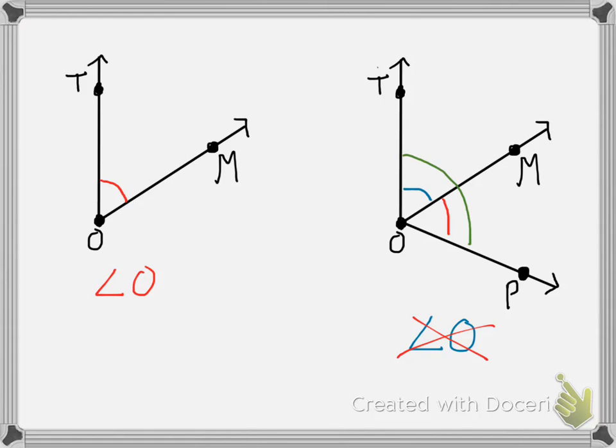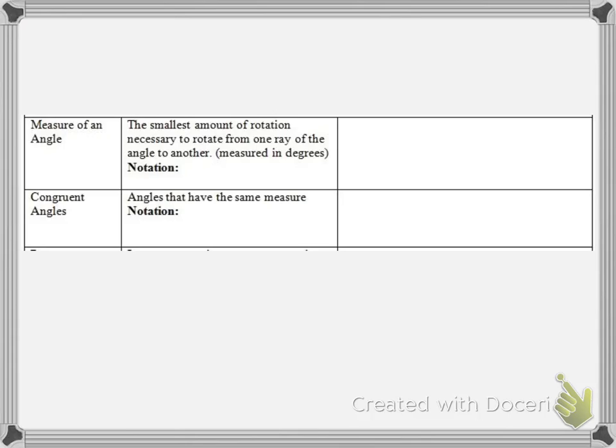We want to talk about the measure of an angle and congruent angles. For a measure of an angle, that's the smallest amount of rotation necessary to go from one ray of the angle to the other. So let's just say this is a 40 degree angle. The way we would write that is, say we call this angle A. So we would write M for measure, angle A equals 40 degrees. That's how we can state the measure of an angle.